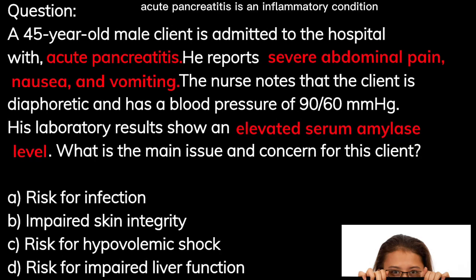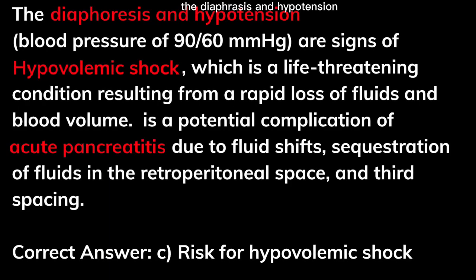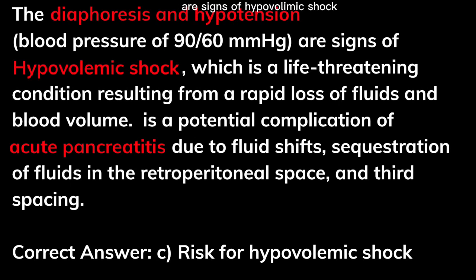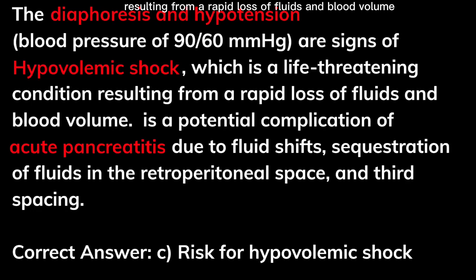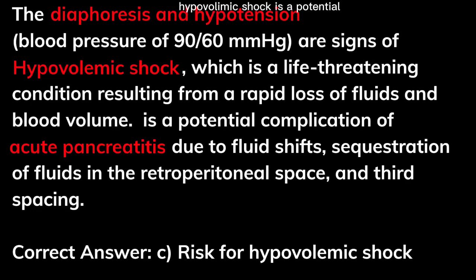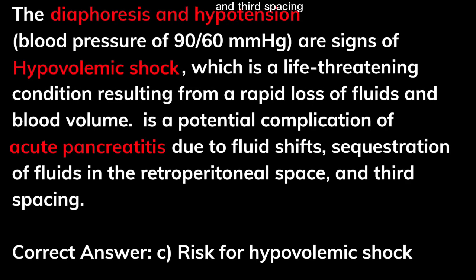Acute pancreatitis is an inflammatory condition of the pancreas that can lead to serious complications. The diaphoresis and hypotension — blood pressure of 90 over 60 millimeters of mercury — are signs of hypovolemic shock, which is a life-threatening condition resulting from a rapid loss of fluids and blood volume. Hypovolemic shock is a potential complication of acute pancreatitis due to fluid shifts, sequestration of fluids in the retroperitoneal space, and third spacing. Correct answer: C, risk for hypovolemic shock.